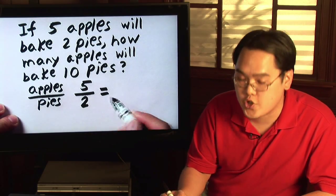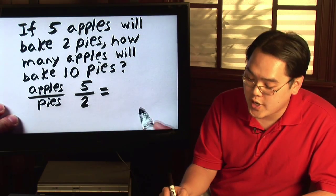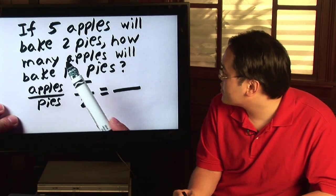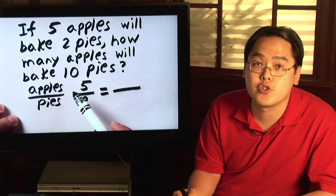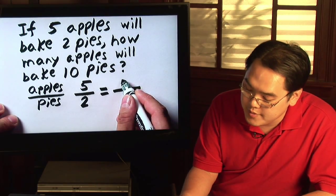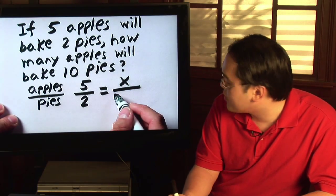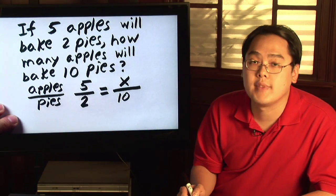What you're going to have here is another fraction on the other side of the equal sign. How many apples? Since you don't know how many apples but you do know it's on top, let's just put x for the numerator and then ten pies will be ten at the bottom.